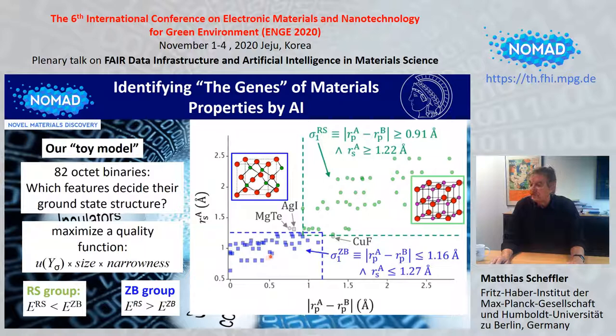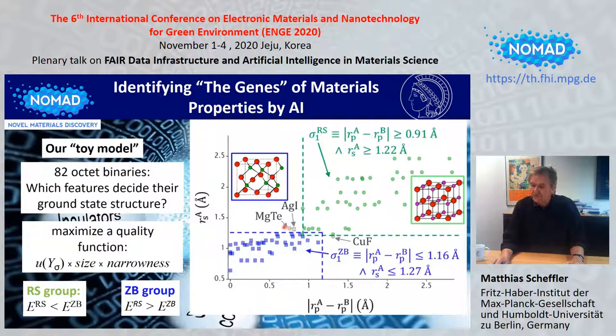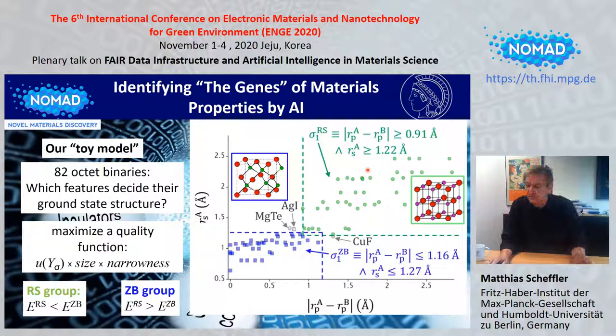There are still three materials not covered: magnesium telluride, silver iodide, and copper fluoride — slightly outside these regions. Looking at total energy differences, the zinc blende and rock salt structures for these are very similar, with differences of the order of 10 meV, so even density functional theory gives no clear answer. With subgroup discovery we get the structural groups and also find the parameters which drive this process — what we call the genes of the materials properties.